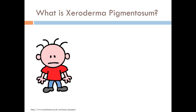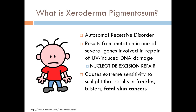So what exactly is Xeroderma Pigmentosum? It is an autosomal recessive disorder caused by mutation in at least one gene involved in UV-induced DNA damage repair. This process is known as nucleotide excision repair, or NER. The disorder leads to extreme sensitivity to sunlight that may result in freckles, blisters, flaky skin, and eventually fatal skin cancer.